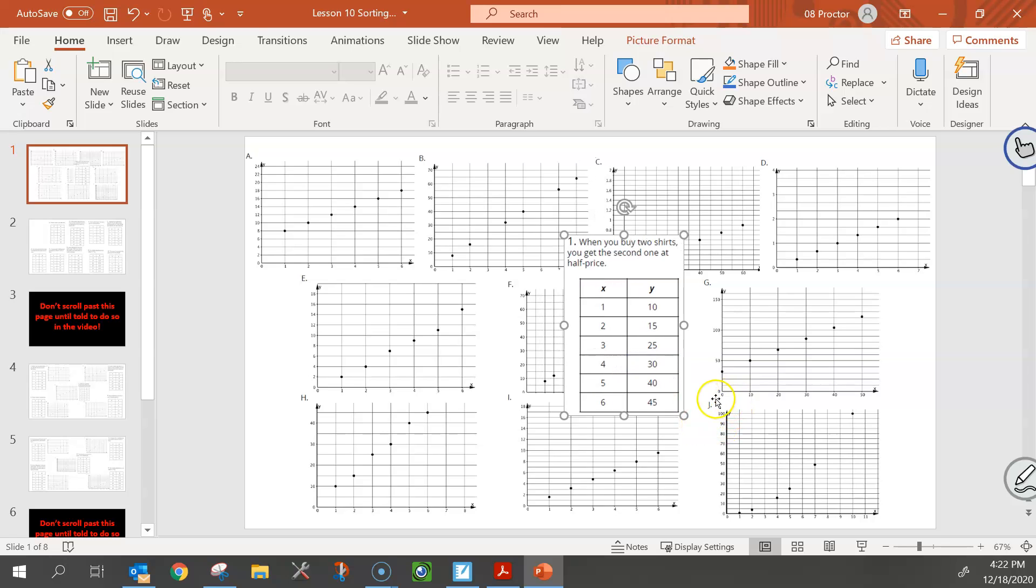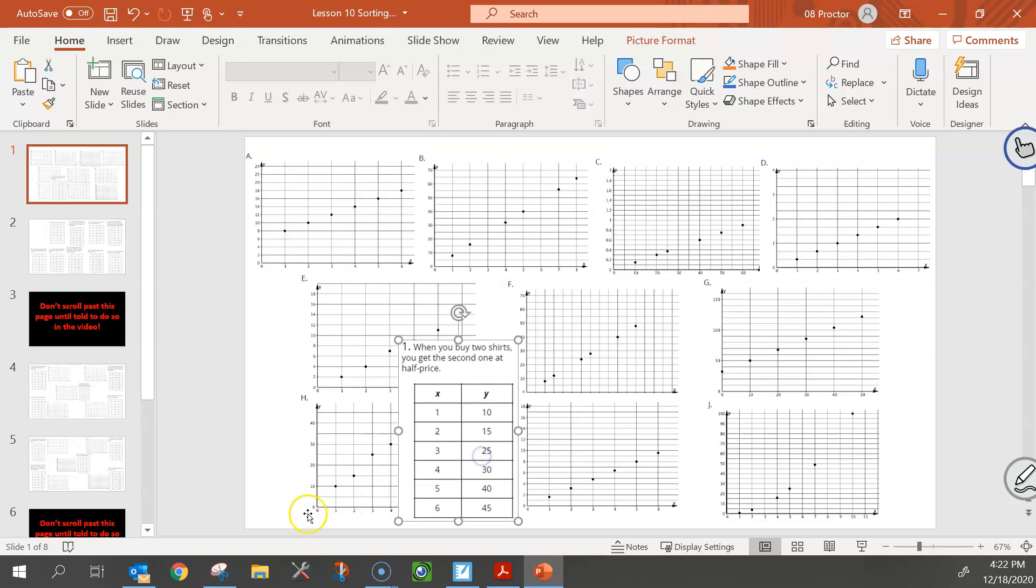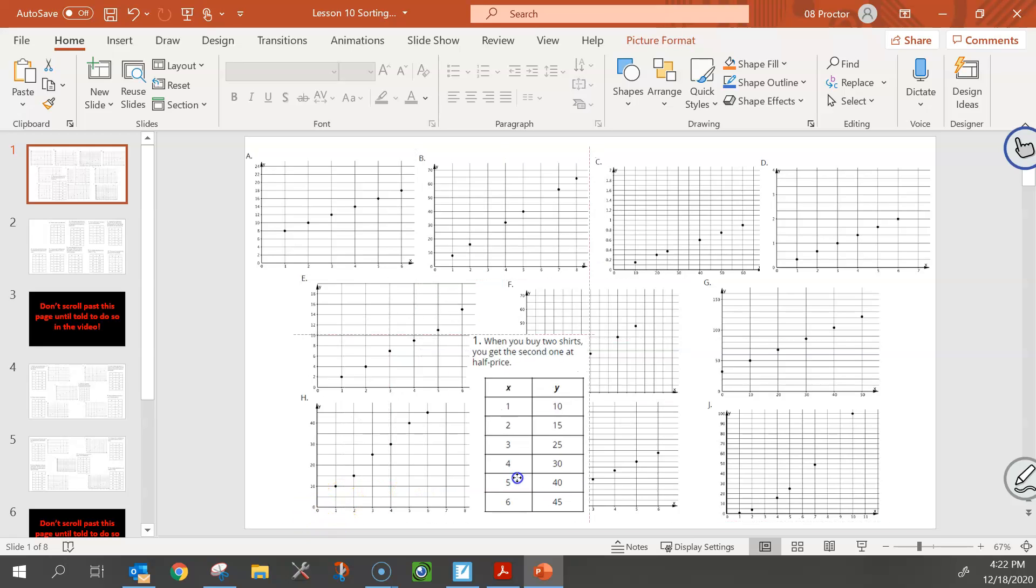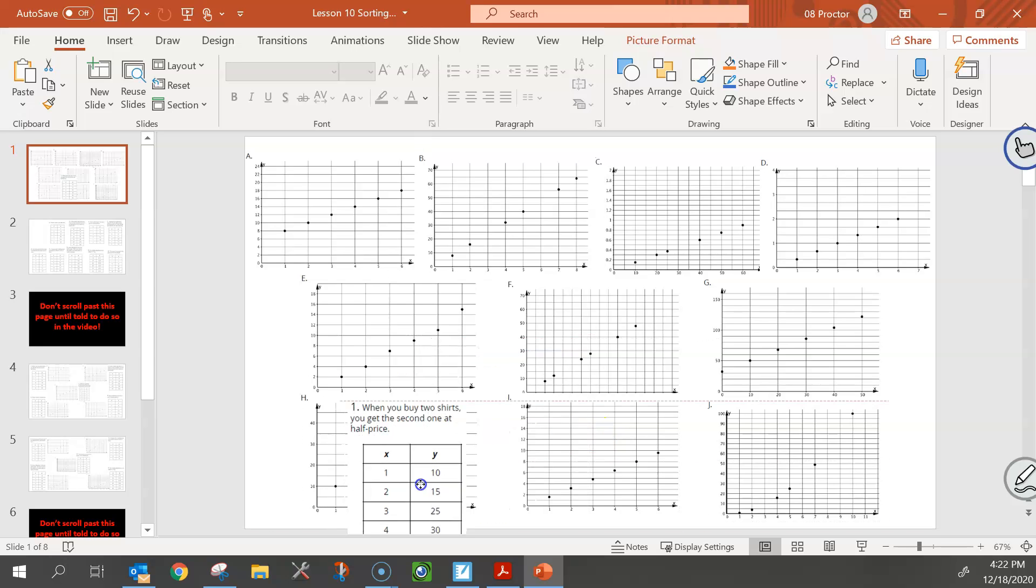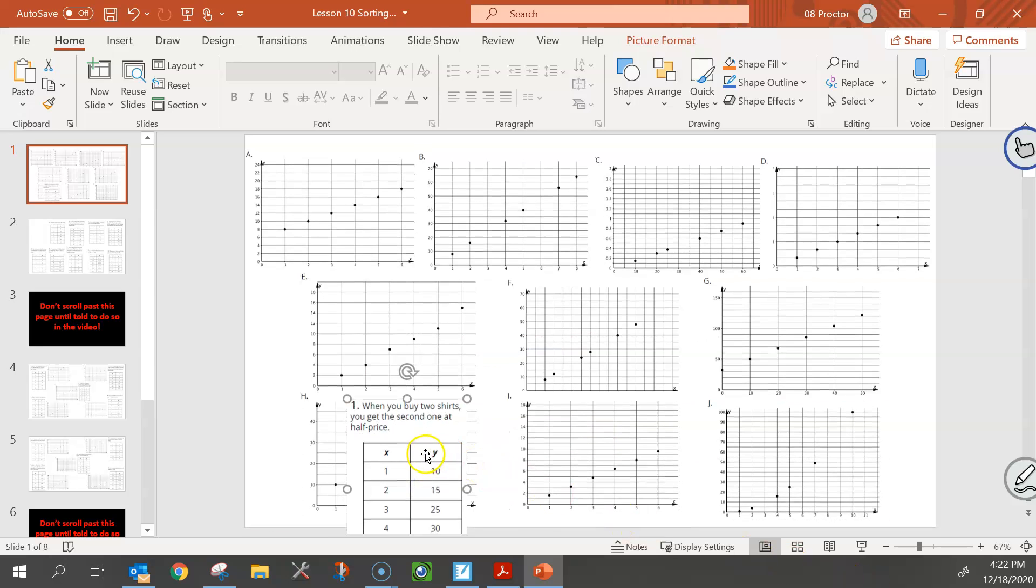So let's take a look. Over 1 up 10. We have over 1 up 10. Over 2 up 15. That's exactly what we see there. Over 3 up 25. Over 3 up. Yep. 25. Over 4 up 30. Over 4 up 30. Yep. Looks like I found my match. So now I know that 1 and h are paired together. And that's all that you're going to do. Now that 1 and h are paired together, I know that I don't need to worry about looking at h anymore. I'm going to go back here and I'm going to take this next one. There's number 2. I'm going to paste it on over here and see if I can match up and figure out which one that graph goes with.